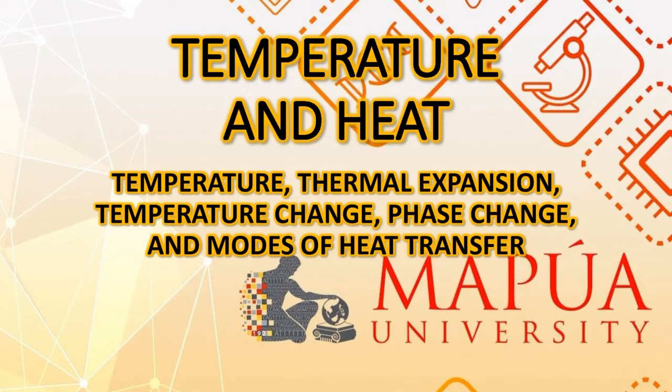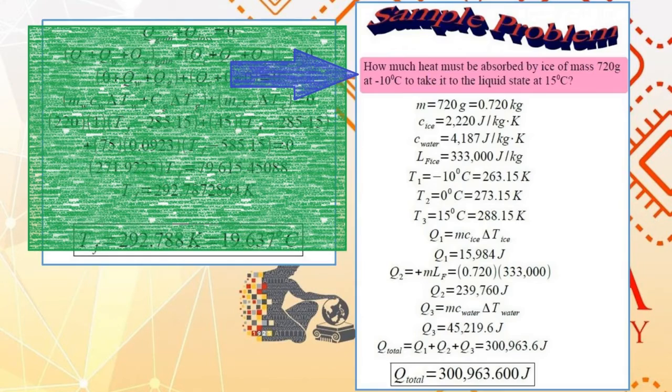Continuing on with our discussion of examples of temperature and heat topic, let's now have the following problem. How much heat must be absorbed by ice of mass 720 grams at negative 10 degrees Celsius to take it to the liquid state at 15 degrees Celsius?